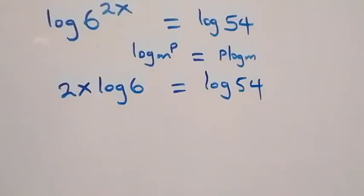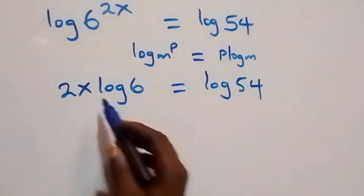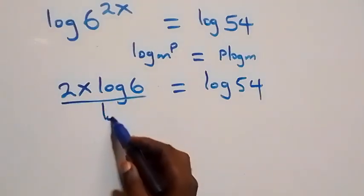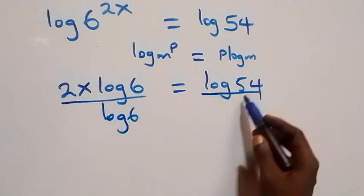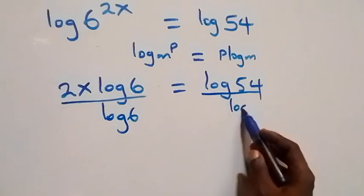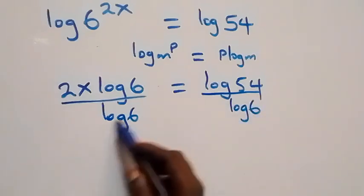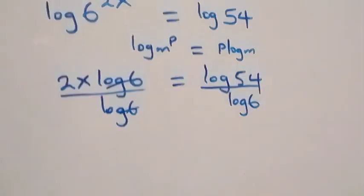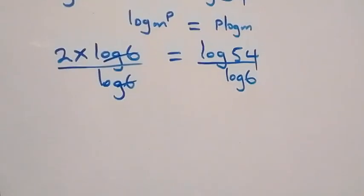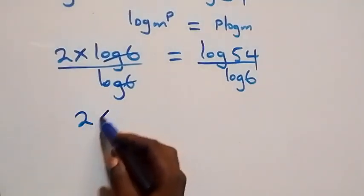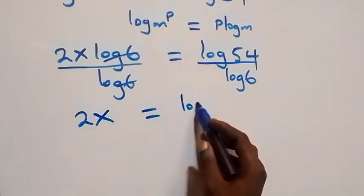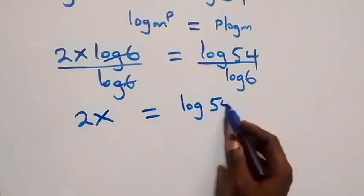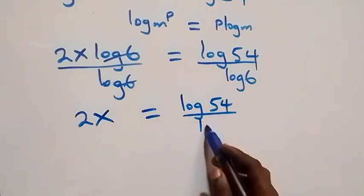The next step: we divide both sides by log 6. Dividing both sides by log 6 means log 6 cancels on the left, and we are left with 2x equals to log 54 over log 6.